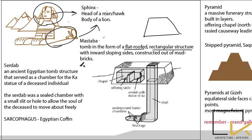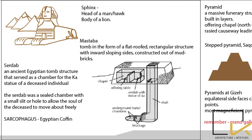As you can see in the picture, mastaba has underground burial chambers with a long shaft leading to it, and sardab is a small chamber with a slit hole, allowing the soul of the dead to move about freely — it was their belief that the soul would move through that slit hole chamber.